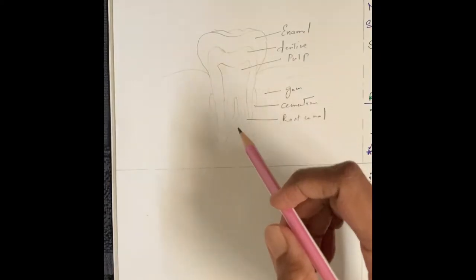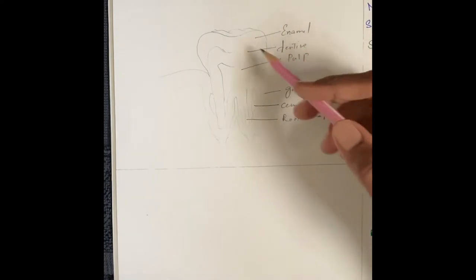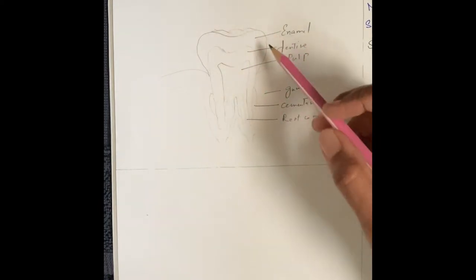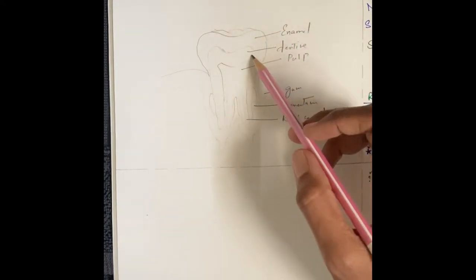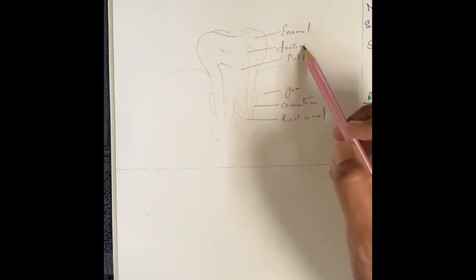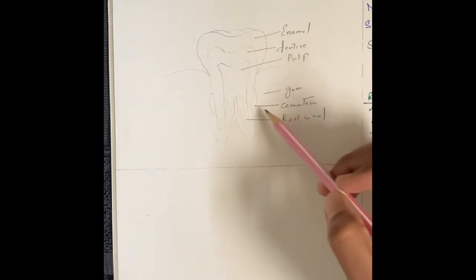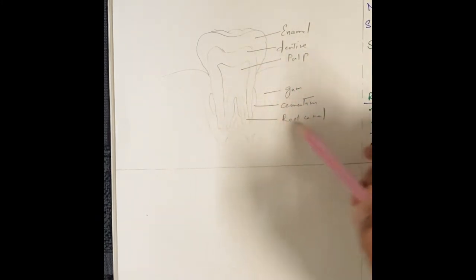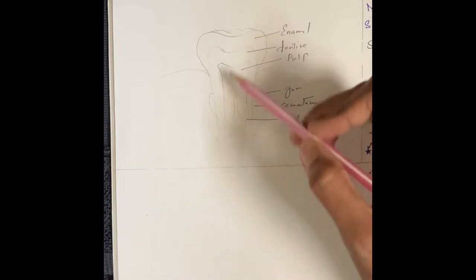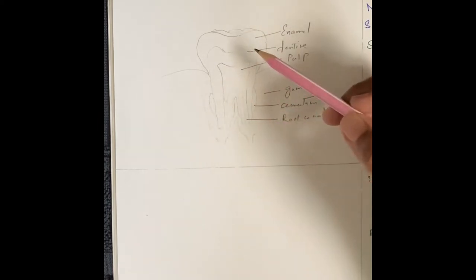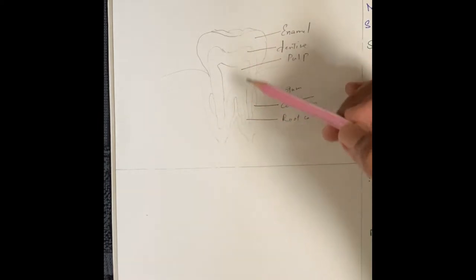Before going into the pathology, you should know the parts of a tooth. We have enamel on the outside, the inside part is dentine, we have pulp, the gum, cementum, and the root canal. Blood vessels and nerves pass through the root canal into the pulp.